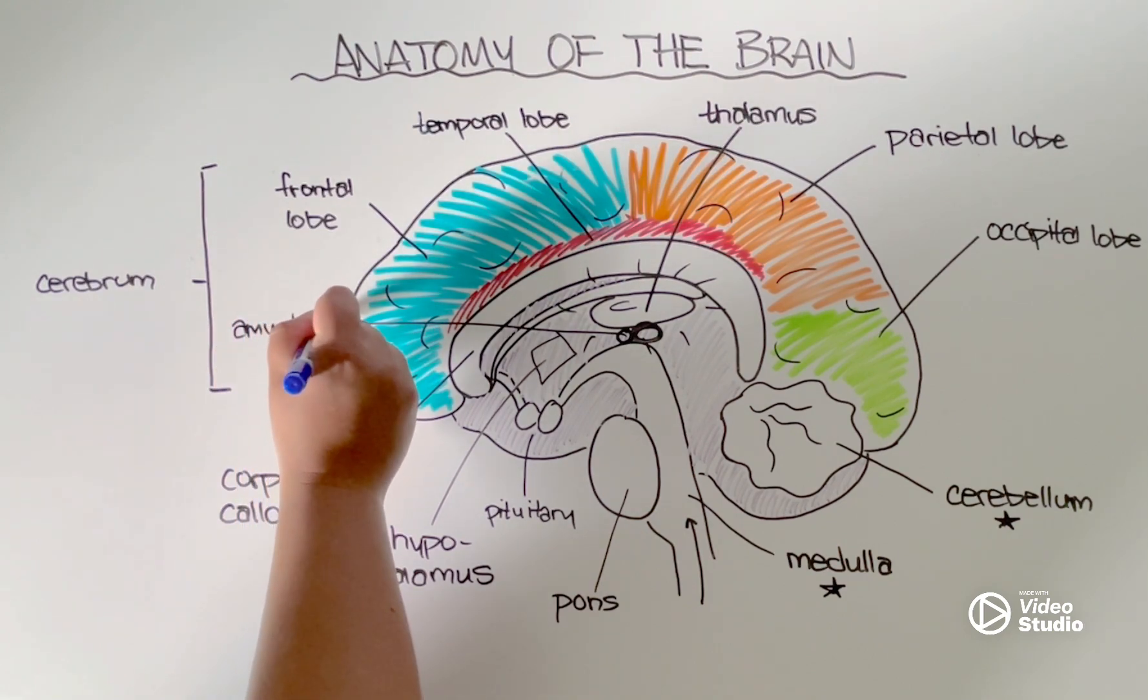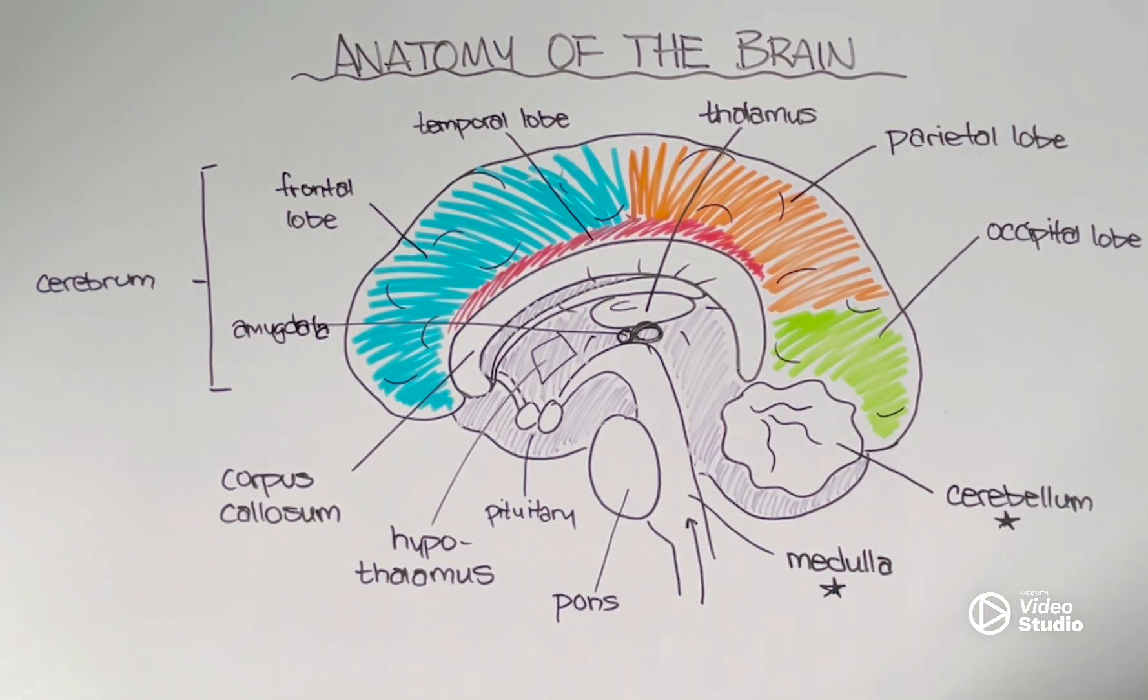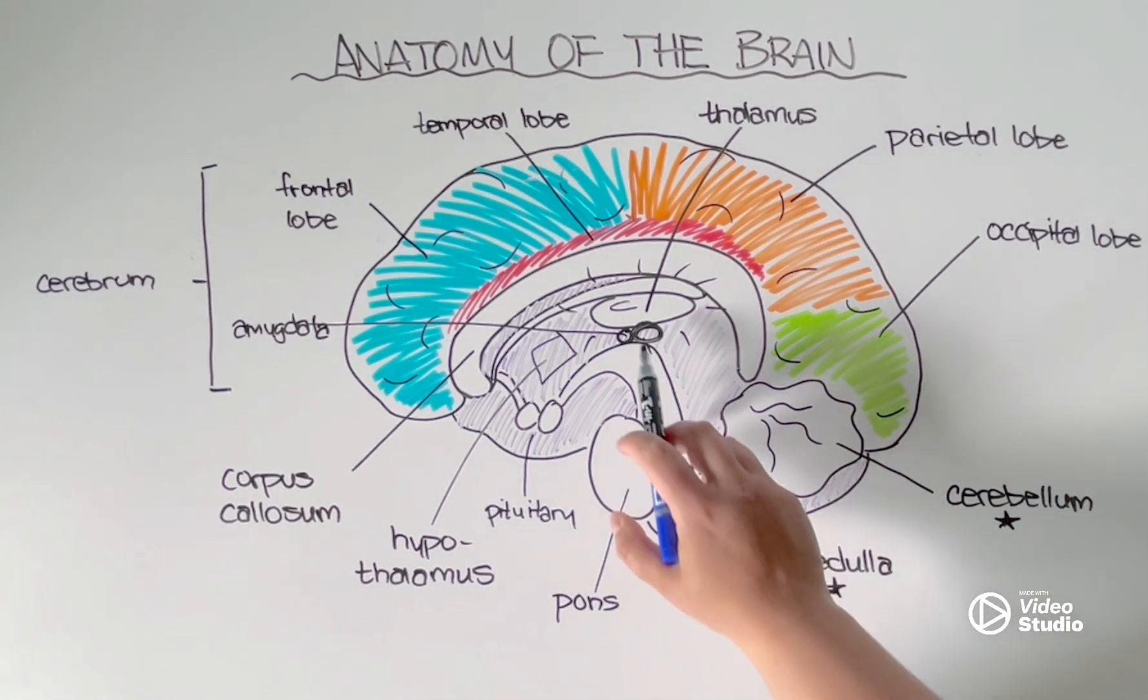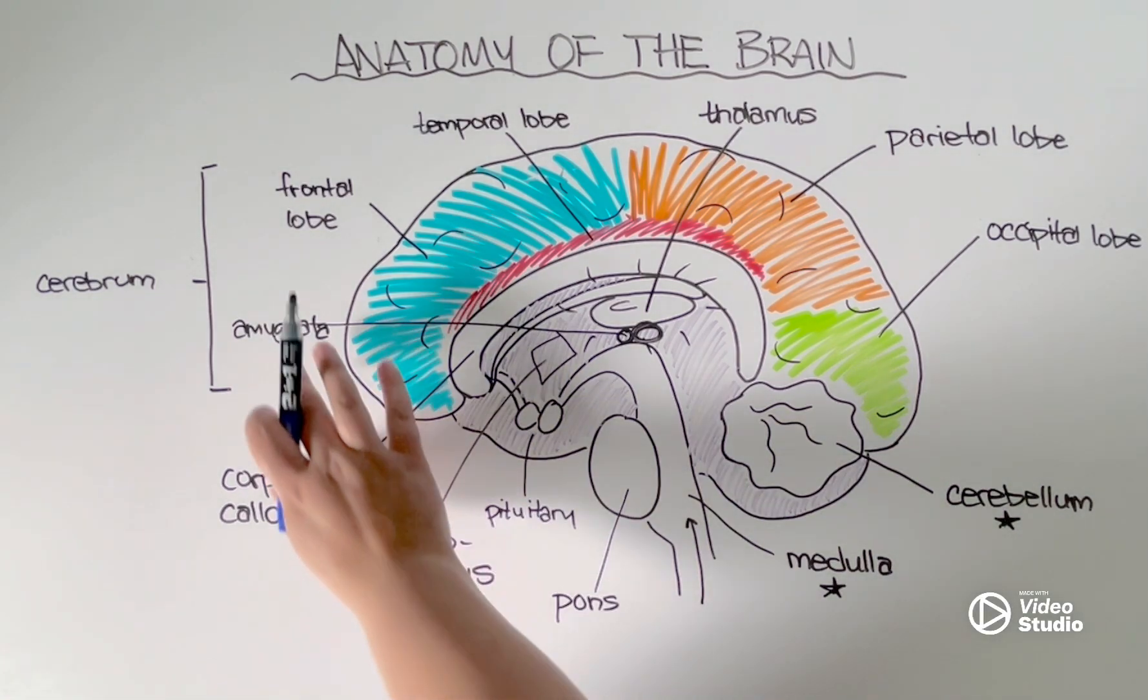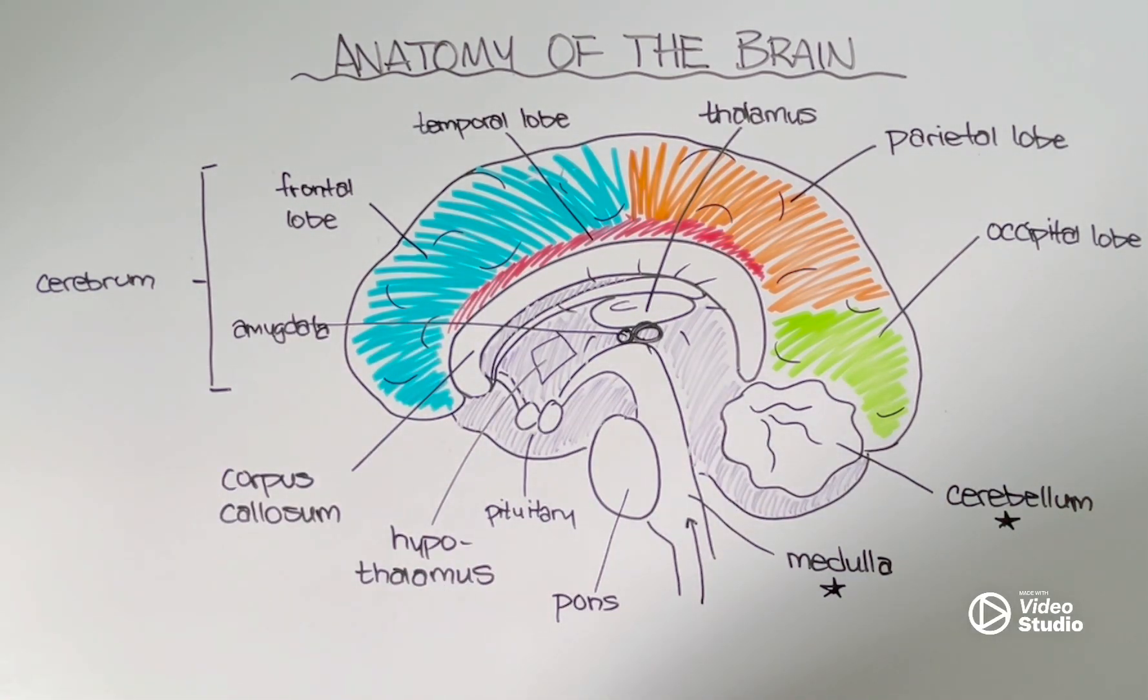right here, it's responsible for regulating our emotional responses, specifically anger. And the amygdala has really tight connections to the frontal lobe. That's why as you get older, you get a little bit better at regulating your emotions, such as anger. Whereas a toddler who doesn't have a frontal lobe yet, maybe not so much.